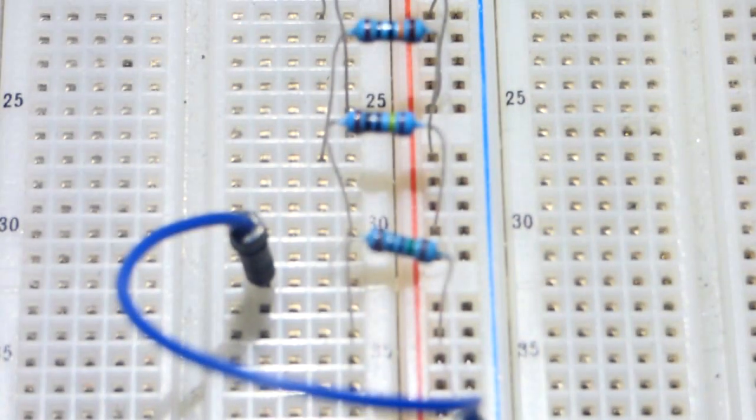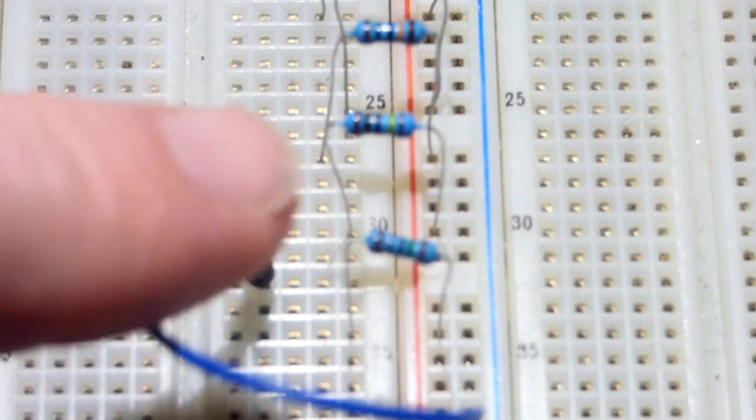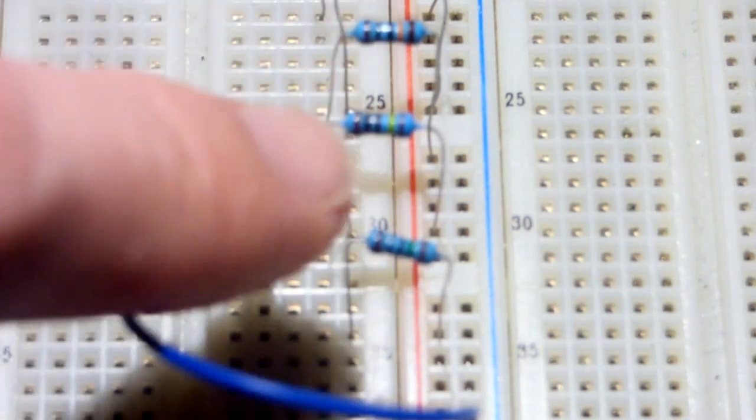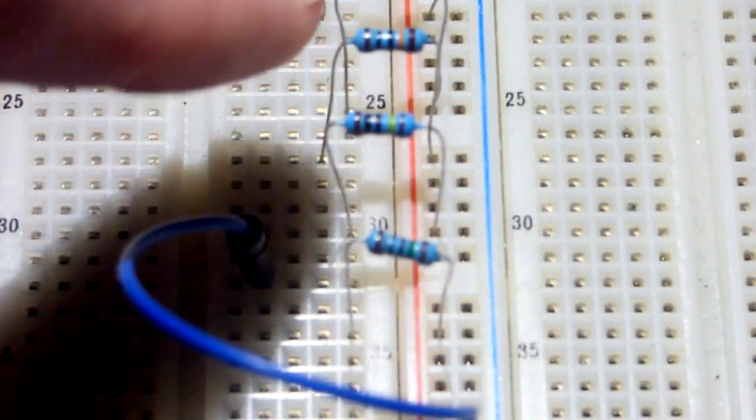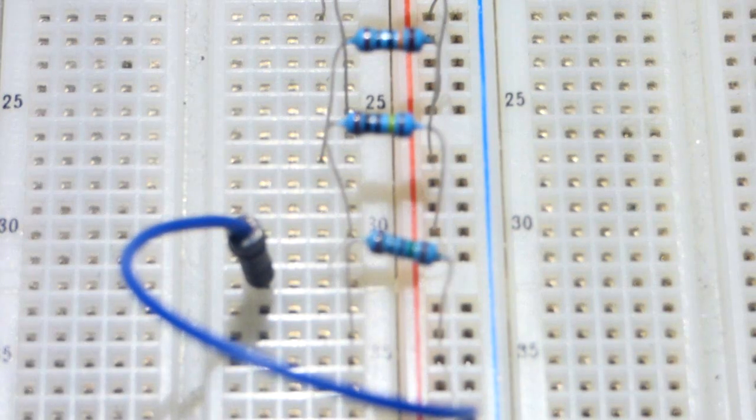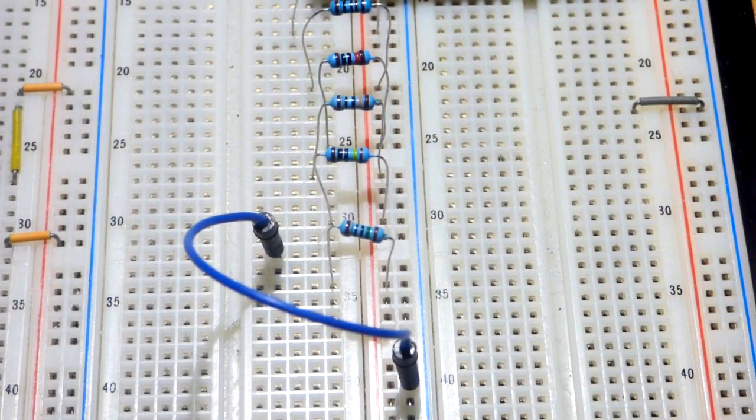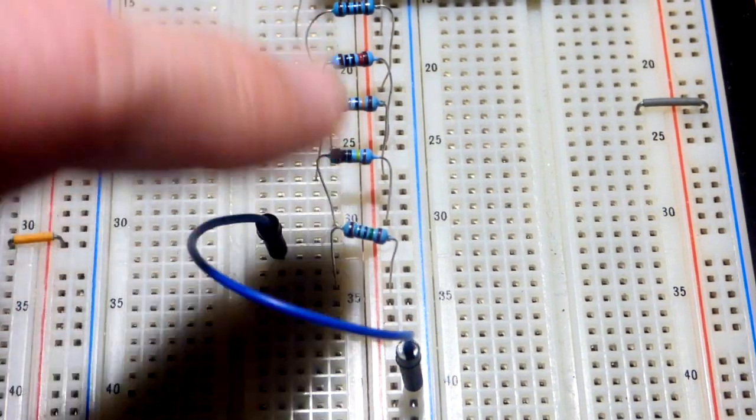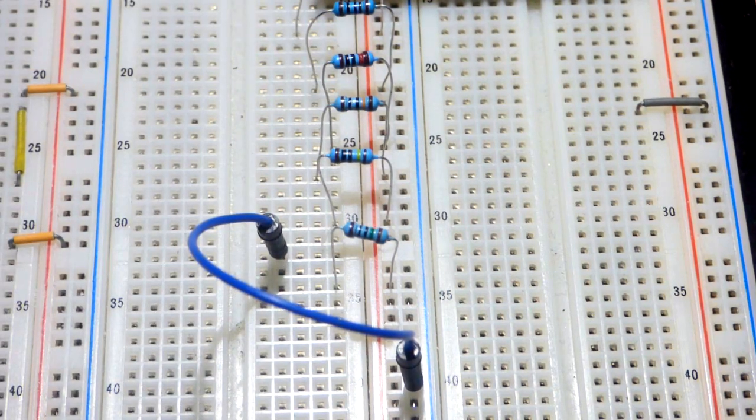One thing about resistor values when you're trying to learn the color code is that a lot of values repeat themselves. So you'll probably see 1, 0, 0 a lot. And after that, all you need to know is that last stripe to get its exact value, the multiplier. And so just once you got the 100 down, and then the different color stripes, that will transfer really easily to other resistors.